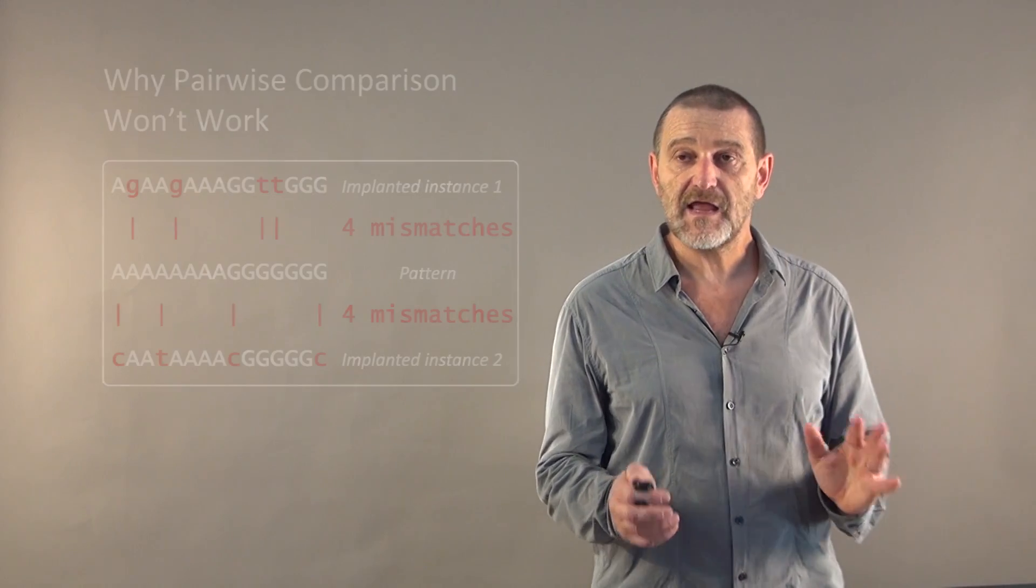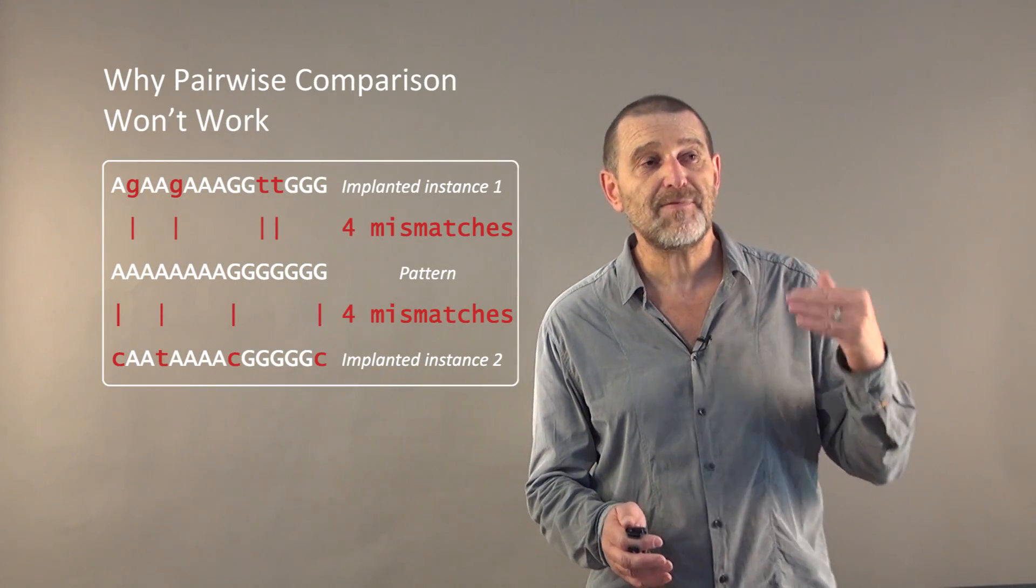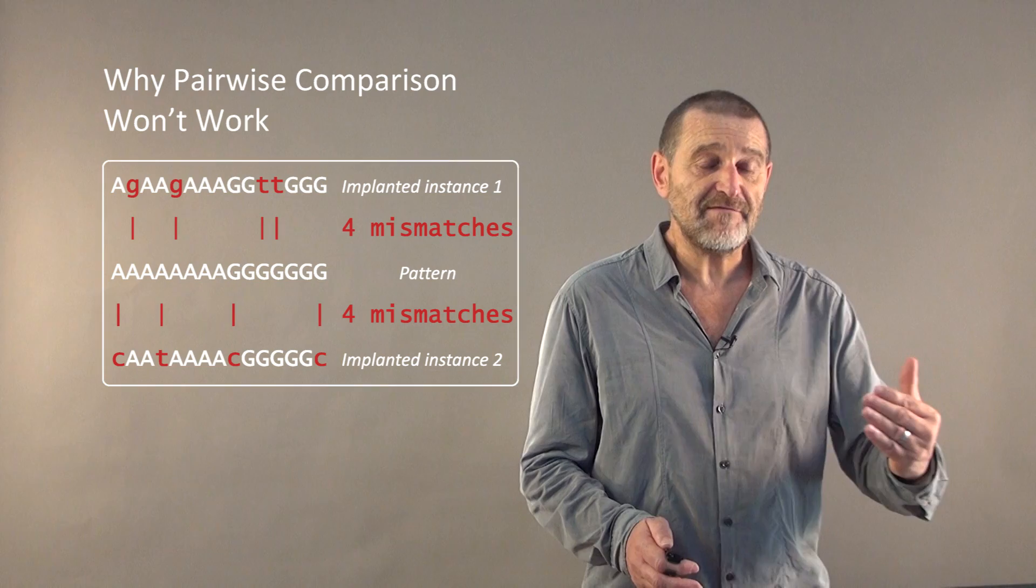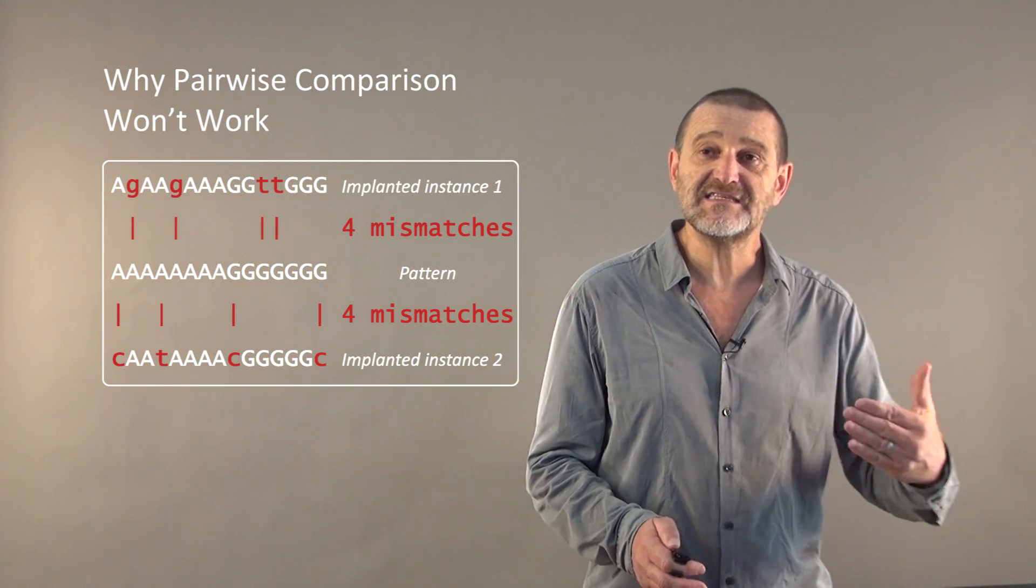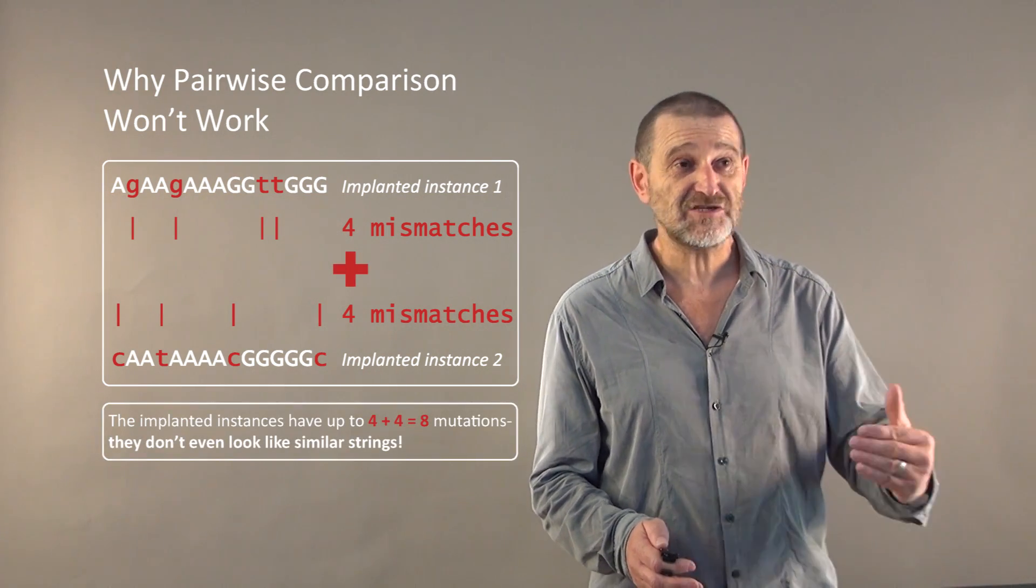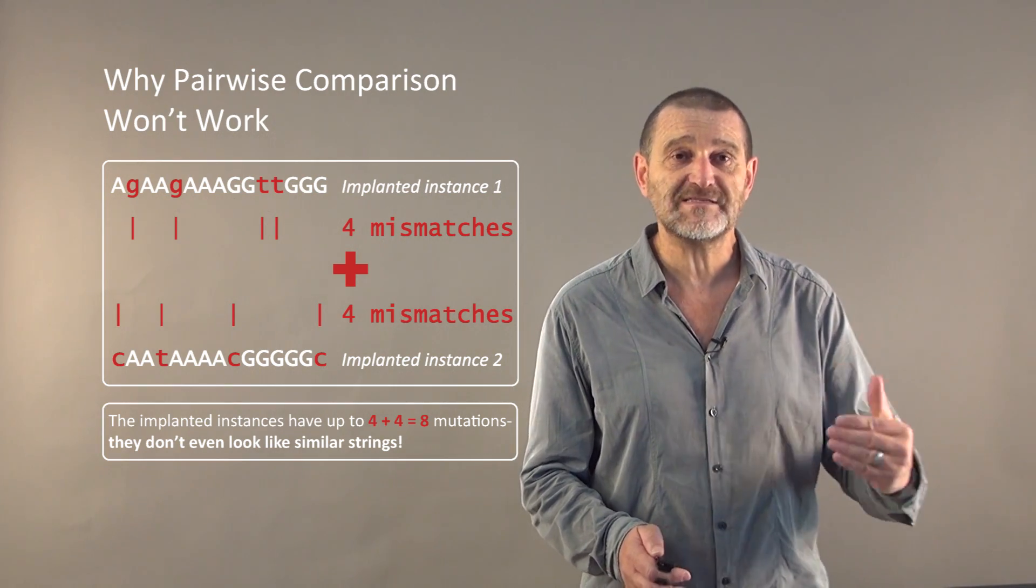Unfortunately, it won't work. Because when we implant a pattern, it has 4 differences from the original pattern. But we don't have access to the pattern, so there is nothing to compare with. The only thing that we have are implanted instances, but every 2 implanted instances are actually 4 plus 4, maybe 4 plus 4 mutations apart. How can we find them? Since pairwise comparison won't work, maybe the only option we have is just to explore all 4 to the power k possible k-mers. Should we explore all of them? Not necessarily, because if a k-mer is so far away from all k-mers in the strings that we analyze, there is no reason to explore it.